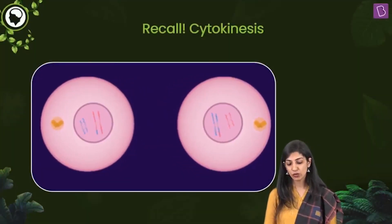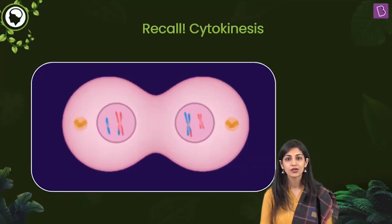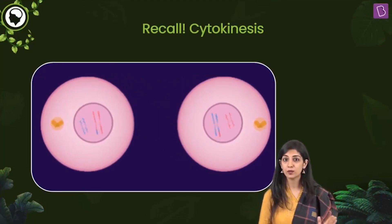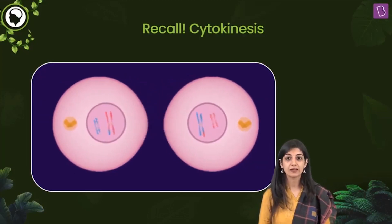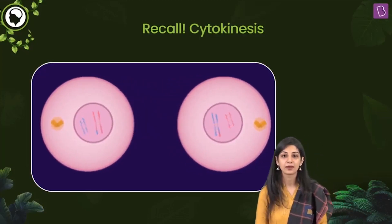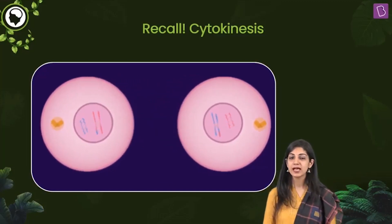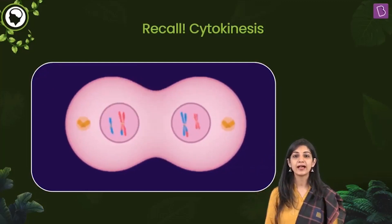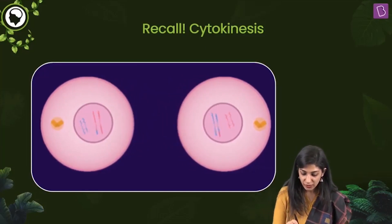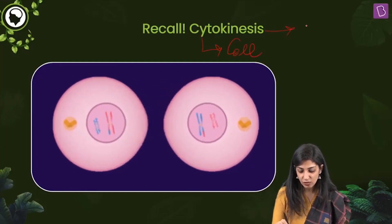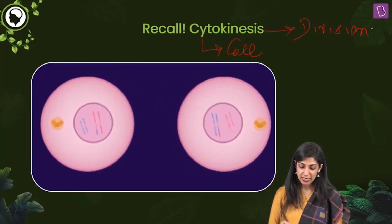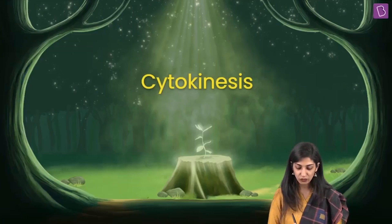Now what you see in front of you — all of you know this, you've been studying it from junior classes. You have done it in your 11th class, the chapter of cell and cell division. This is cytokinesis happening during cell division. We have karyokinesis, and after that the daughter cells detach or separate — called cytokinesis. Cyto means cell, kinesis means division; karyo means nucleus, kinesis means division.